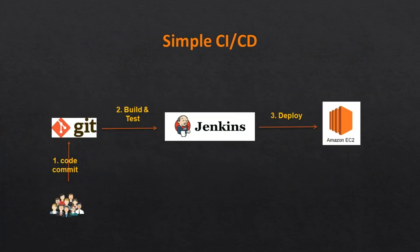Initially we'll start with setting up a simple CI/CD pipeline. Assume that developers have already developed their code — we are going to push it into Git, that code will get built and tested, and we'll deploy it initially on an EC2 instance, which is essentially deploying on a VM.